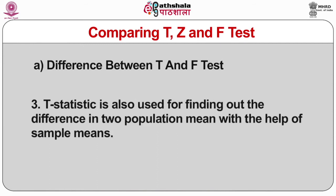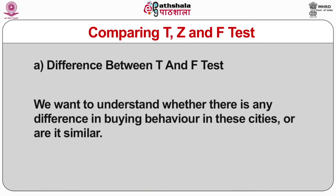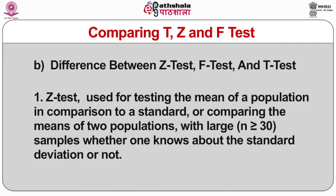Third, T-statistics is also used for finding out the difference in two population means with the help of sample means. For example, if we want to understand the buying behavior of customers from two cities for a particular product — whether there is any difference in buying behavior or they are similar — we can now understand the difference between the three tests: F, T, and Z.